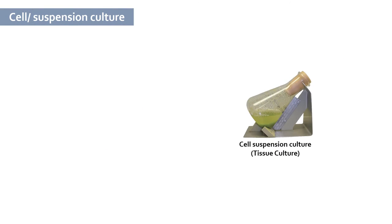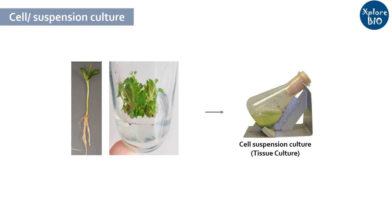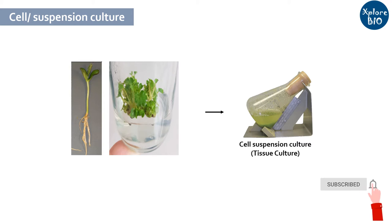For cell culture or suspension culture, leaves and roots from seedlings or in vitro grown plants are generally used as initial explants.